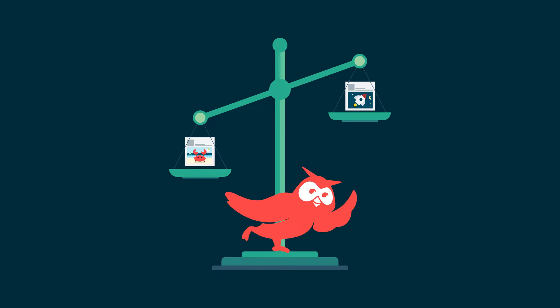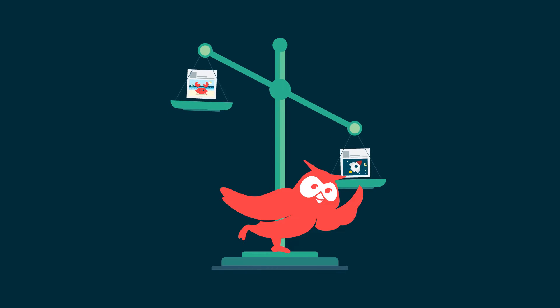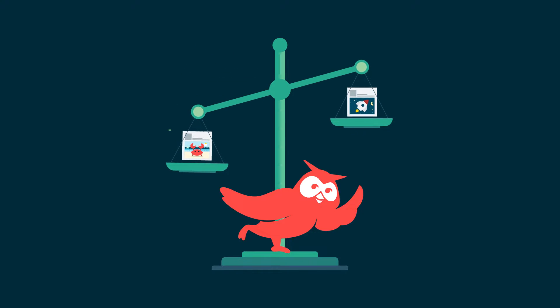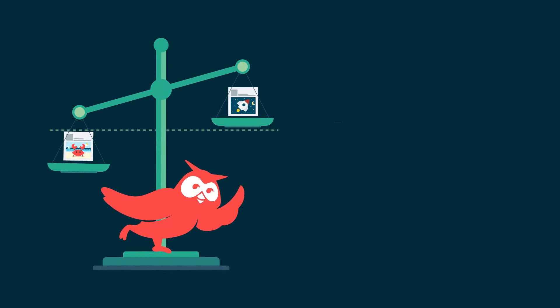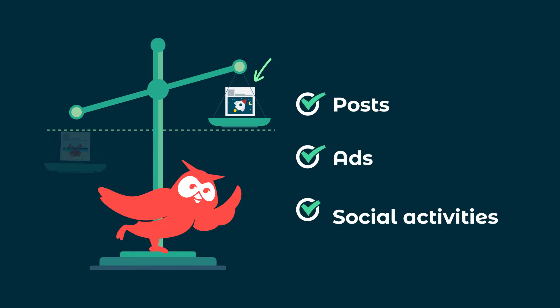Hootsuite's Content Comparison Tool helps you improve your social strategy by allowing you to set content baselines to identify top-performing posts, ads, and social activities.